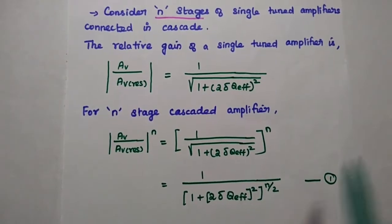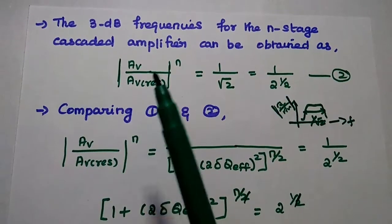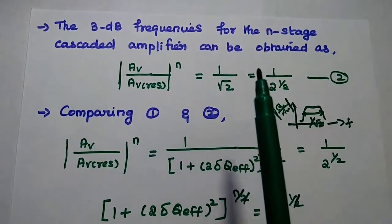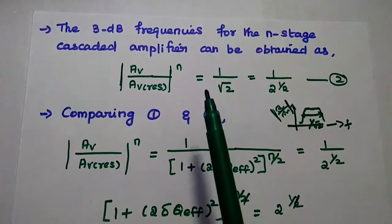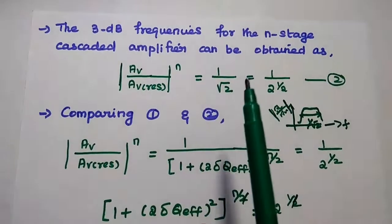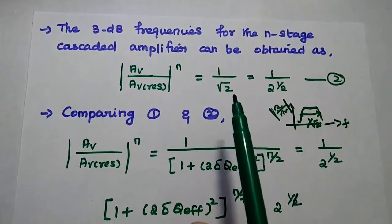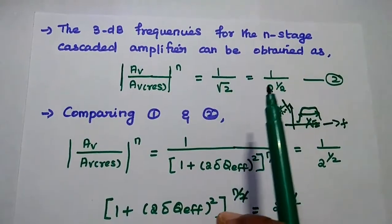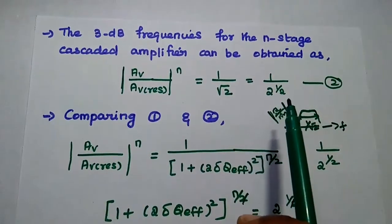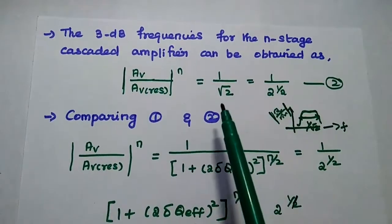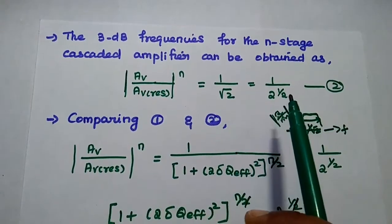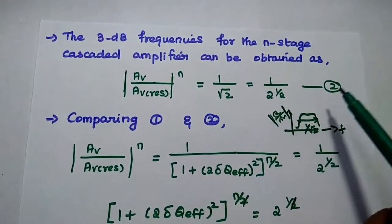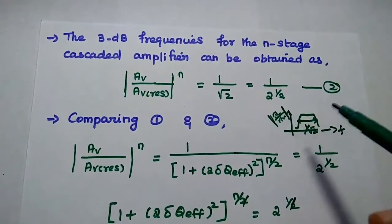In general, the 3 dB frequencies for the n-stage cascaded amplifier are obtained when the relative gain equals 1 divided by √2, which can be written as 1 divided by 2^(1/2). Consider this as the second equation.